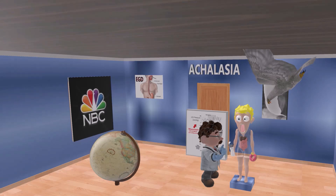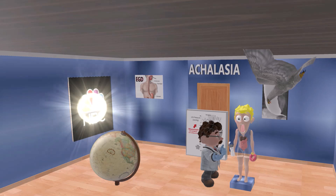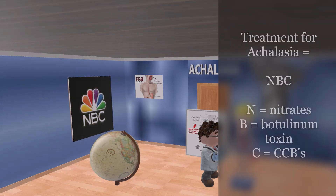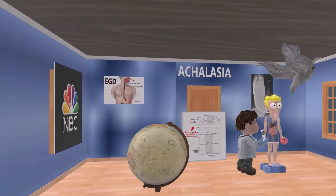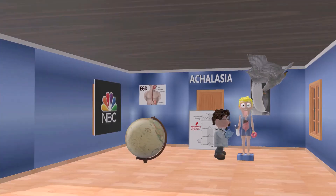For treatment, an NBC News logo on the wall serves as a mnemonic: N for Nitrates, B for Botulinum toxin injection into the LES, and C for Calcium channel blockers — these are short-term treatments. Long-term management includes pneumatic balloon dilation or surgical Heller myotomy.